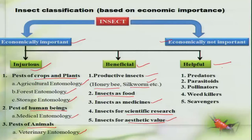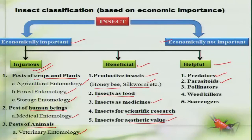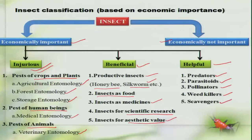Under the helpful group of insects, some insects actually feed on those insects which are pestiferous or injurious in nature. We refer those insects as predators and parasitoids, which indirectly help in the agricultural ecosystem. The majority of insects like bees and butterflies which perform pollination service are helpful in that way. Some insects which feed on plants considered to be weeds are referred to as weed killers. And of course, many insects help by decomposing waste material and are referred to as scavengers.